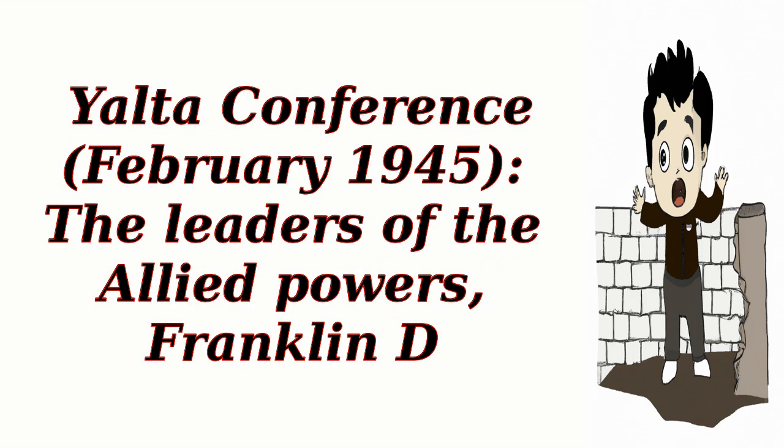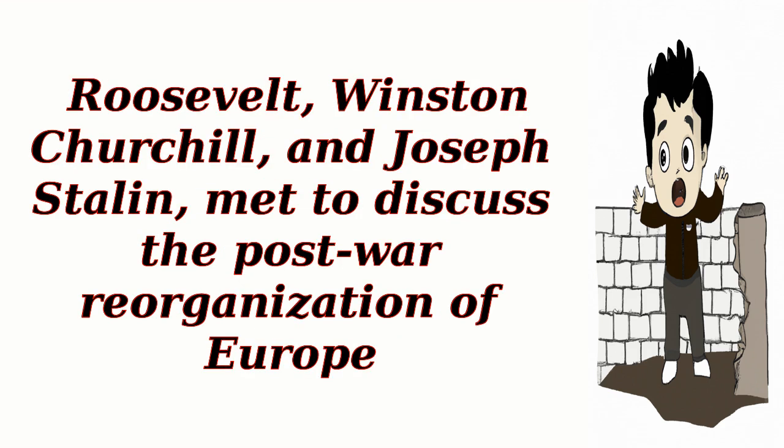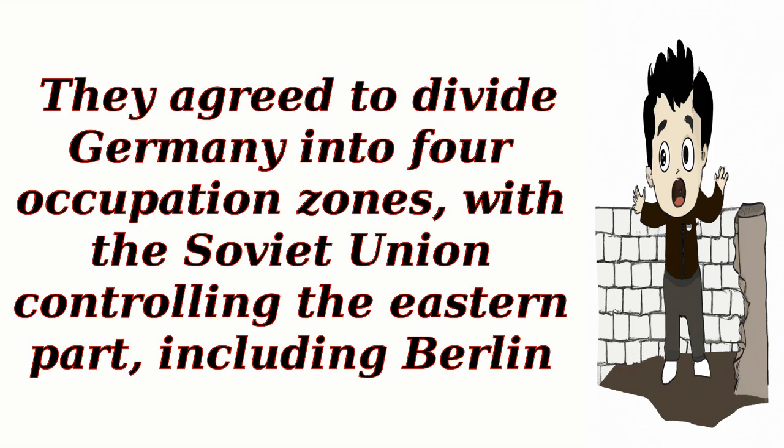Yalta Conference, February 1945: The leaders of the Allied Powers — Franklin D. Roosevelt, Winston Churchill, and Joseph Stalin — met to discuss the post-war reorganization of Europe. They agreed to divide Germany into four occupation zones, with the Soviet Union controlling the eastern part, including Berlin.